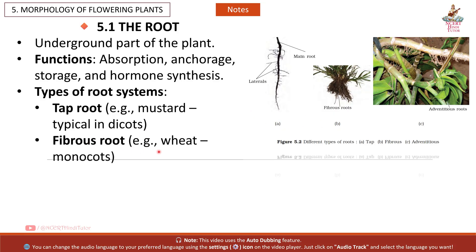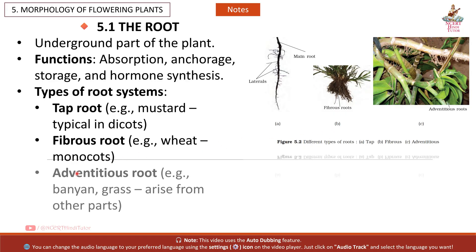Fibrous roots, e.g. wheat — typical of monocots. Adventitious roots arise from other parts of the plant, e.g. banyan and grass.